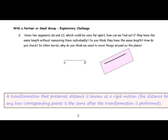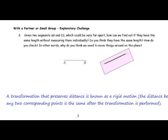A transformation that preserves distance is known as a rigid motion. The distance between any two corresponding points is the same after the transformation is performed. We'll be talking more about these rigid motions and preserving distance over the next few lessons.